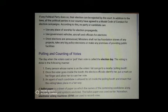An agent of each candidate is allowed to sit inside the polling booth to ensure that the voting takes place in a fair way. A ballot paper is a sheet of paper on which the names of contesting candidates along with party names and symbols are listed. The ballot paper was used earlier. Nowadays, Electronic Voting Machines, or EVMs, are used to record votes.